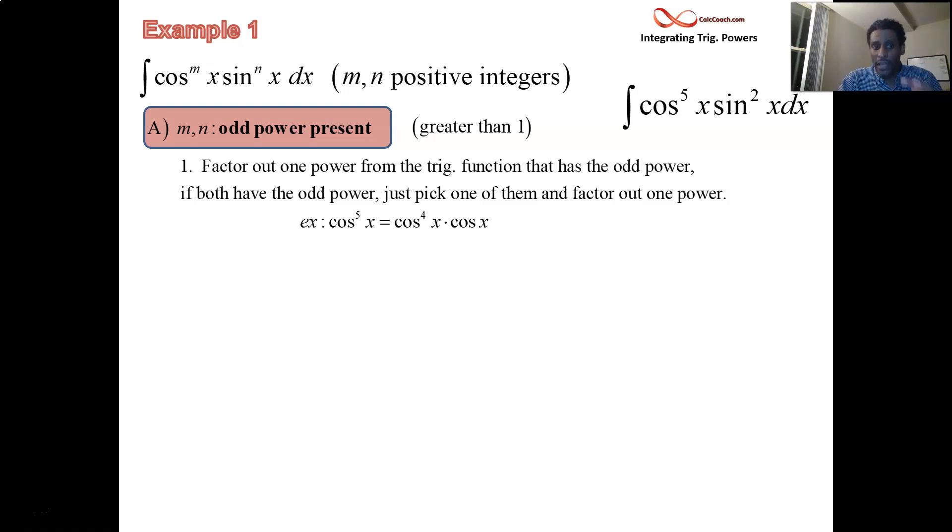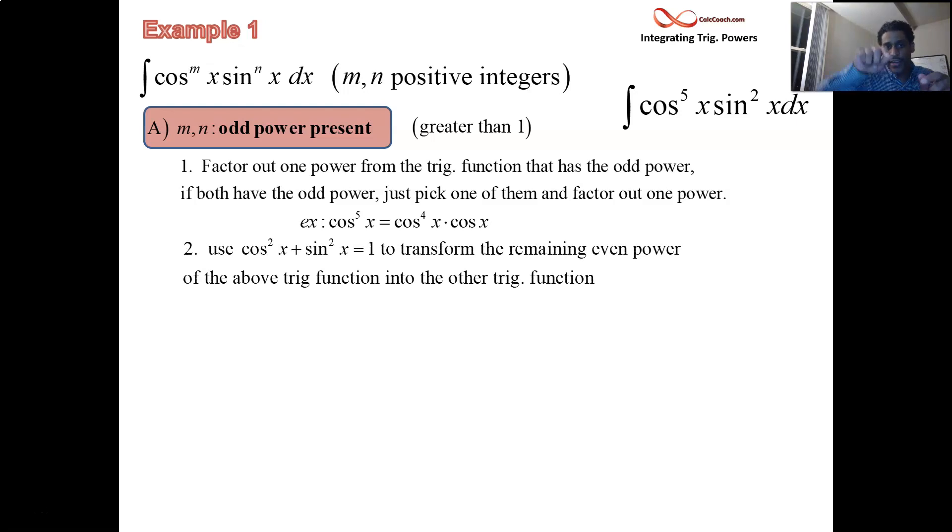Rewrite cosine fifth as cosine fourth times cosine. Now what you need to do with the rest of those powers of cosine, you need to convert them. See, cosine squared is one minus sine squared, so you're going to convert the four powers of cosine that are left over using that identity. Replace cosine squared with one minus sine squared. Now you have cosine fourth, which is cosine squared squared, so just replace it with one minus sine squared quantity squared. Don't multiply it out, leave it exactly as it is.